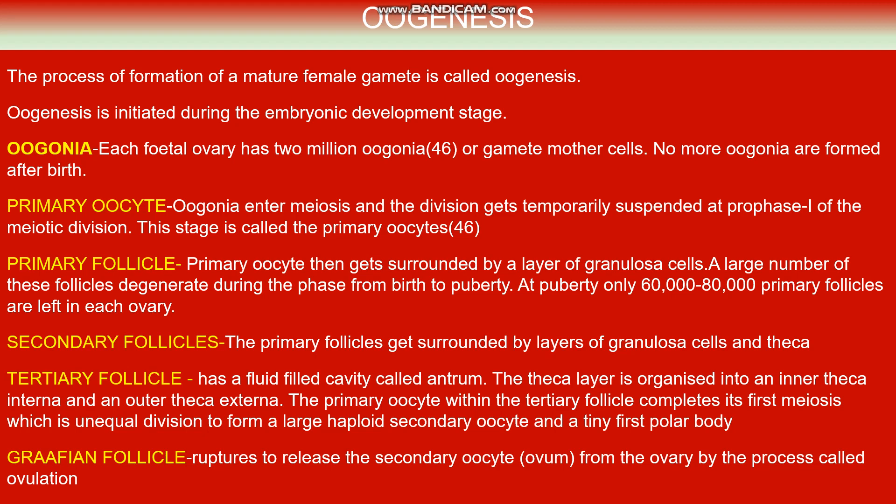Oogonia then enter meiosis, but meiosis is not completed. Primary oocytes are formed, but the division remains suspended at the prophase 1 stage of meiotic division. As a result, the primary oocytes are also diploid, carrying 46 chromosomes. This primary oocyte then gets surrounded by a layer of granulosa cells, and that stage is called the primary follicle.